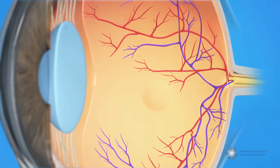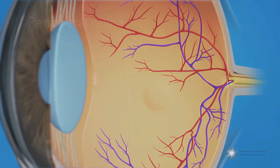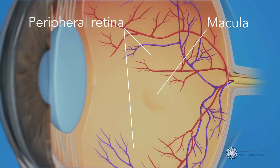The retina has two areas: the peripheral retina, which gives us our side or wide-angle vision, and the macula, the small area at the center of the retina. The macula gives us our pinpoint vision, allowing us to see detail clearly.